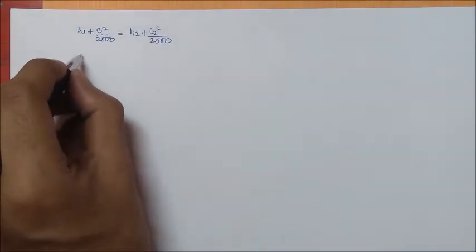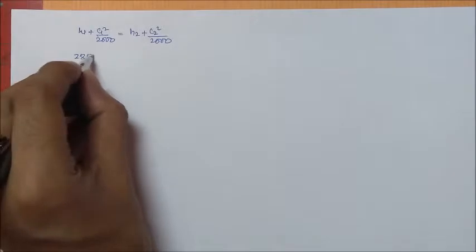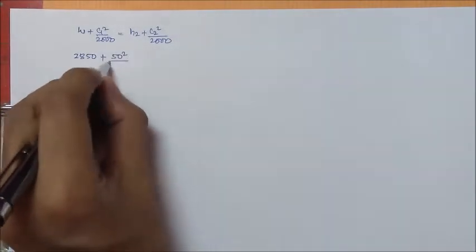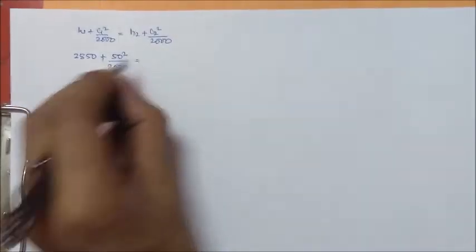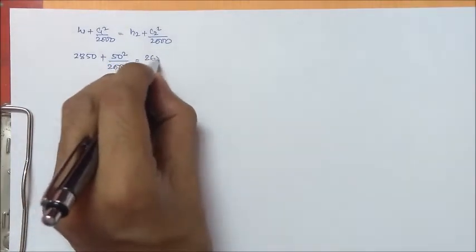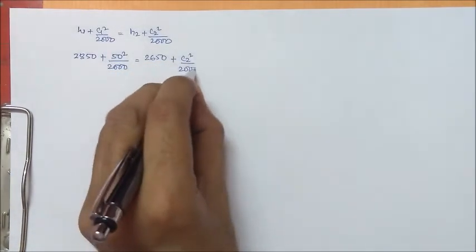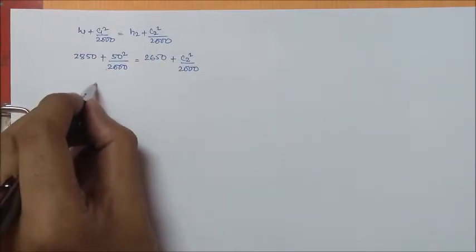So H1 plus C1 square by 2000 is equal to H2 plus C2 square by 2000. Now H1 plus C1, 50 square by 2000, is equal to H2 plus C2 square by 2000, which we have to find out.